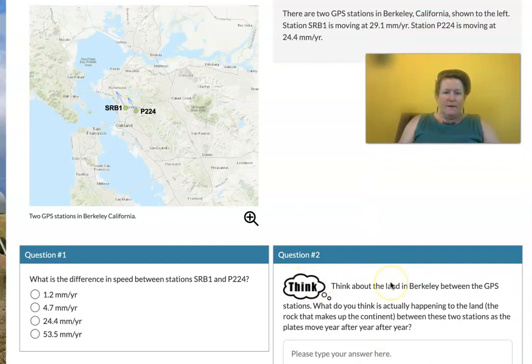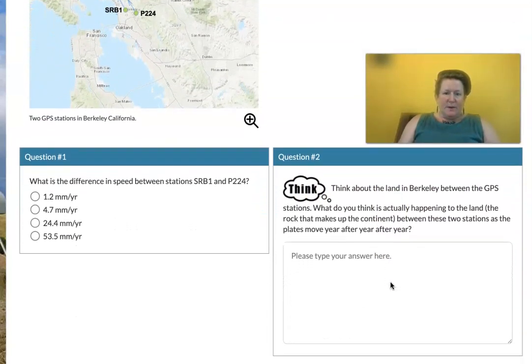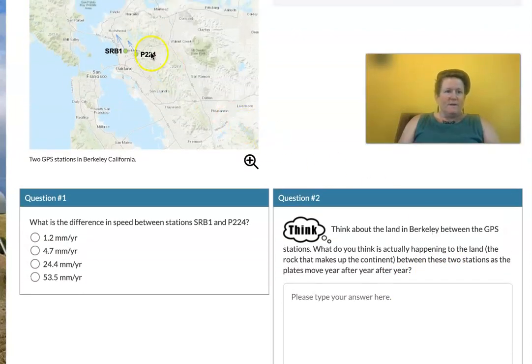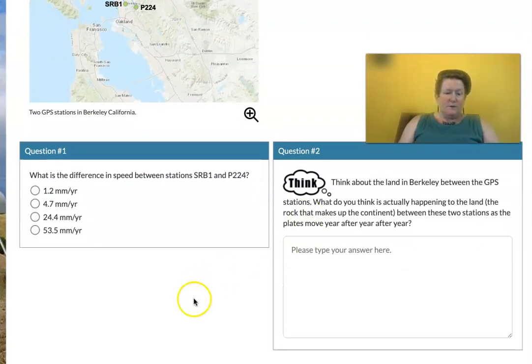The second question here says think about the land in Berkeley between the GPS stations. What do you think is actually happening to the land and the rock that makes up the continent between these two stations as plates move year after year? So one is moving slow and one is moving a little bit faster. What do you think is going to happen between these two points? Write that in question number two.